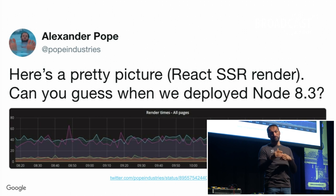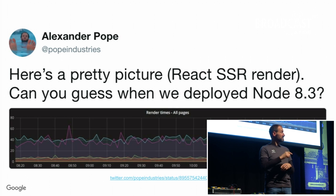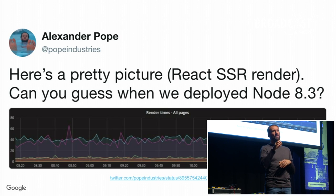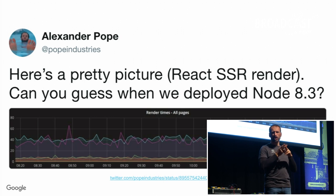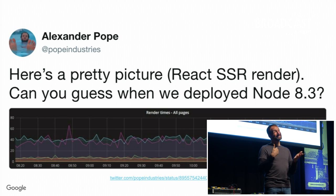And here comes my favorite. Alexander posted this earlier this year — this is TurboFan in one picture. This is when they updated to Node 8.3, which was the first Node version that contains TurboFan. Before the update, performance is a bit shaky, not really predictable or consistent. You can probably tell when they updated — and all of a sudden it's flat, consistent, easy. This is what we really wanted for TurboFan: predictable performance that you can rely on.